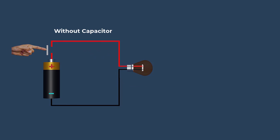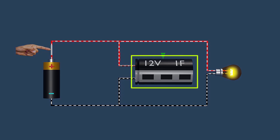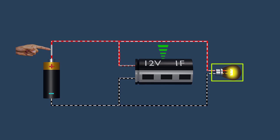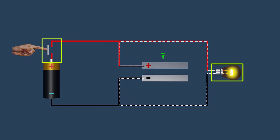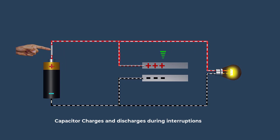If we switch a light bulb on and off rapidly without a capacitor, the light will flash. If we connect a capacitor into the circuit, the bulb will remain illuminated during the interruptions because the capacitor stores and releases the energy during interruptions.